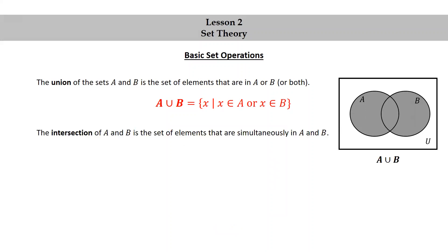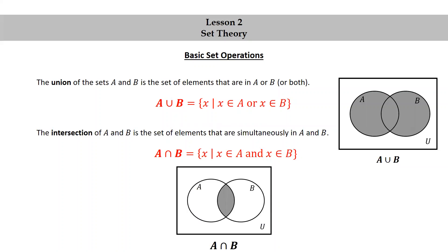The intersection of A and B is the set of elements that are simultaneously in A and B. We use an upside-down U-shaped symbol for the intersection, and we have the intersection of A and B is the set of X such that X is in A and X is in B. Here's a Venn diagram allowing us to visualize the intersection of A and B. Notice how the only part shaded is the part that's common to both A and B.